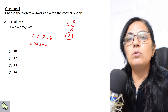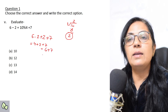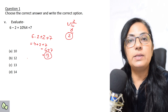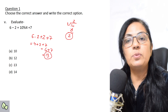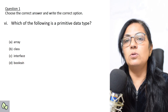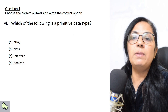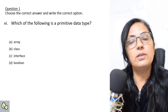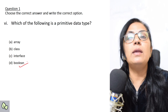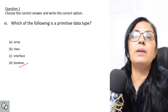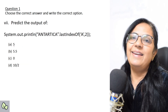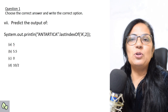Continuing: 6 + 7 = 13. The correct answer is 13. Next question: which of the following is a primitive data type — array, class, interface, or boolean? Boolean is the primitive data type; the rest are non-primitive or derived data types.